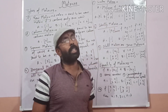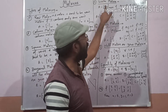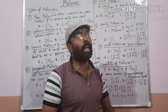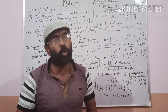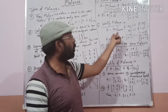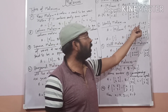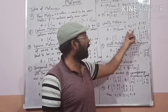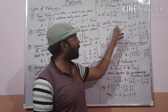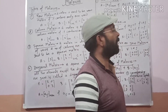Next is the identity matrix. An identity matrix is a scalar matrix where all the diagonal elements are equal to 1. So Aij equals 0 if i is not equal to j, and Aij equals 1 if i equals j. This is called the identity matrix.